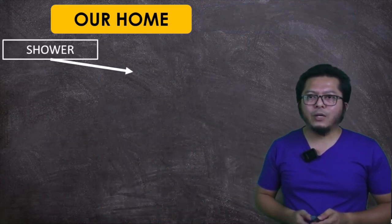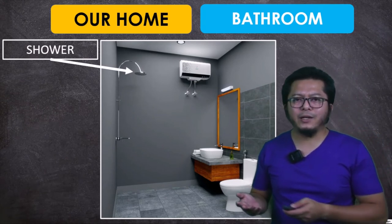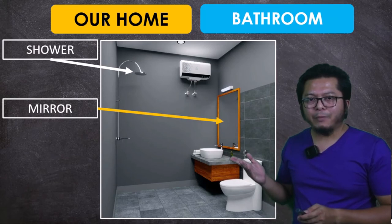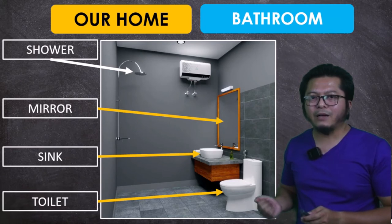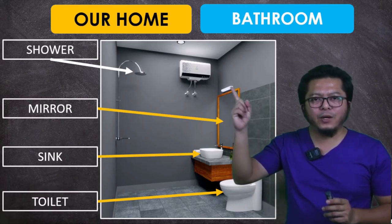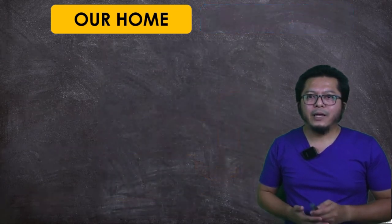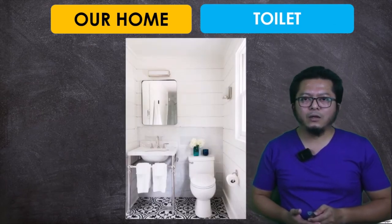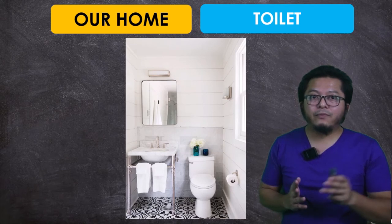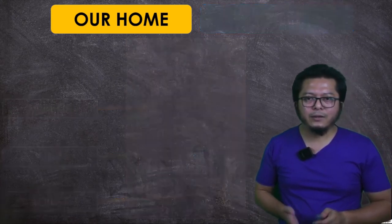Next we want to talk about the bathroom. Maybe yours is different, but we have more or less the same objects: a mirror, a sink, and a toilet. Some bigger homes also have a water heater. Sometimes people have a separate toilet room without a shower — just a toilet with a sink and mirror. It depends on the home.